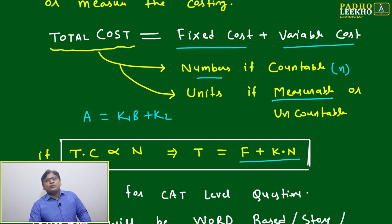Then here, total cost equals fixed cost plus variable cost. Two situations may be: either you are dealing with numbers or countable nouns, then total cost will depend on N. If you are dealing with uncountable nouns, then you have to deal with the measurable quantity.